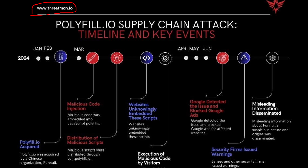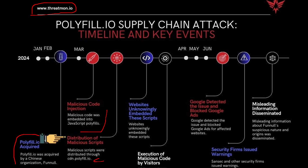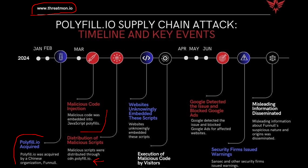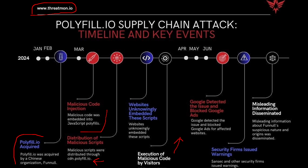Looking at a pictorial view from threatmon.io: polyfill.io was acquired by a Chinese organization named Funnull, and the malicious code was injected into polyfill.js in March. Malicious scripts were distributed through polyfill.io CDN, and websites unknowingly embedded these scripts. Execution of malicious code happened in their applications. This was detected by Google, who blocked Google Ads for the attacked websites in June 2024, and security warnings were issued. This is a software supply chain attack — specifically a package manager attack.